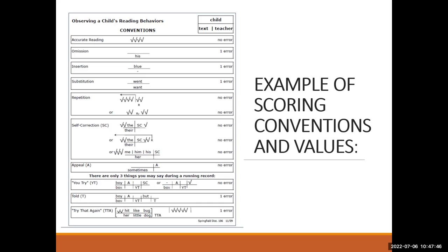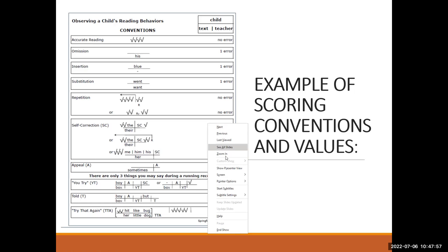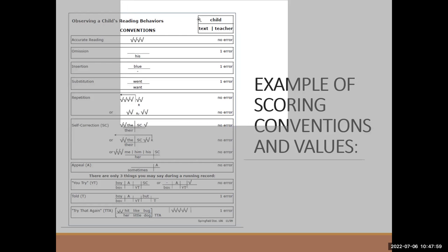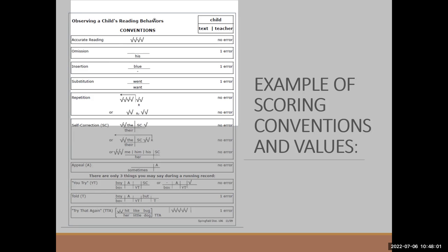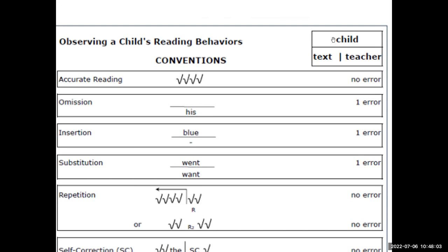Here's a little reminder about what the scoring looks like. This is a different visual that I think is helpful. Remember, on our first video we talked about the fact that whatever the child says goes on top, and whatever they should have said — basically what the text says — goes on the bottom, and that line is in between.